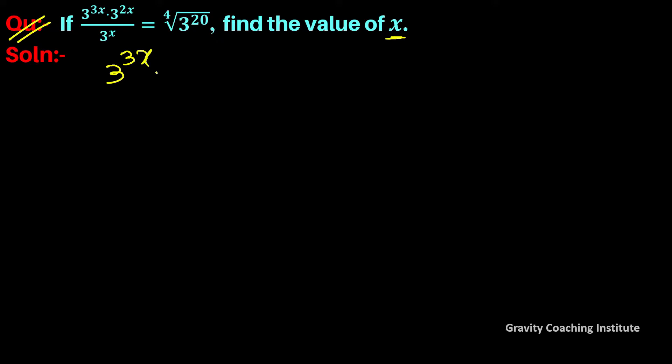Given: 3 to the power 3x into 3 to the power 2x upon 3 to the power x equal to 4th root of 3 to the power 20.